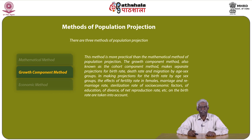The other major method of population projection is the growth component method, also known as the cohort component method. This method is more practical than the mathematical method. It makes separate projections for birth rate, death rate, and migration rates by different age and sex groups. In making projections for birth rate by age-sex groups, the effects of fertility rate among females, marriage and remarriage rates, sterilization rate, socio-economic factors of education, net reproduction rate, and their influence on the birth rate are taken into account.